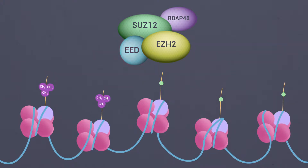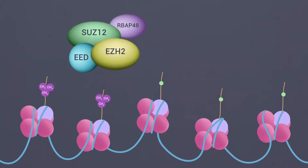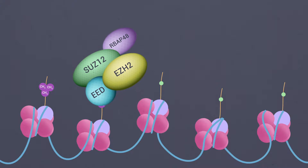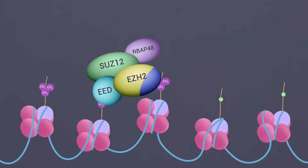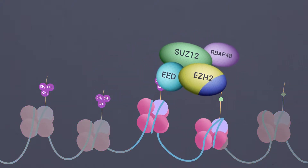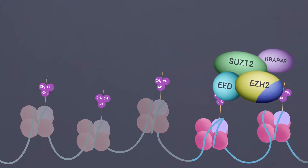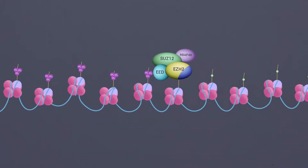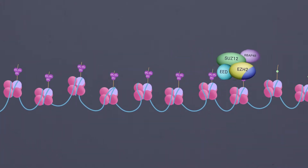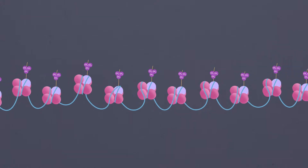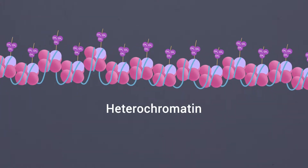The recognition module EED detects trimethylated lysine-27 of histone H3, the catalytic product of PRC2 activity, leading to the characteristic allosteric activation of the SET domain within EZH2. PRC2 is known to be more efficient on methylated dinucleosomes than single nucleosomes or histone peptides. Together, these properties probably facilitate local H3 trimethylation spreading, causing the formation of heterochromatin domains and gene repression.